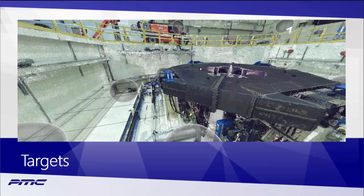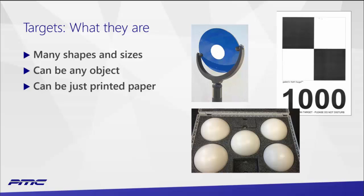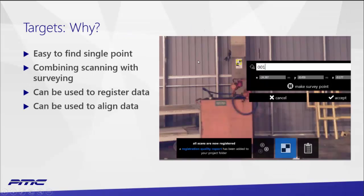We need targets — some known points — and these also allow us to tie conventional surveying into our scan information. Targets come in a lot of different shapes and sizes: perfectly round spheres, older-style blue-and-white checkerboard, black-and-white, and they can even be printed on paper. In ReCap you can see a paper target right on a column — this can become a known point, and we can translate this back to the center point of the column by using techniques of where we position the targets.